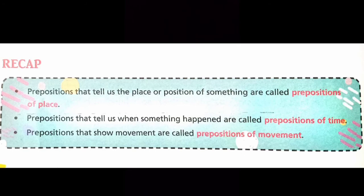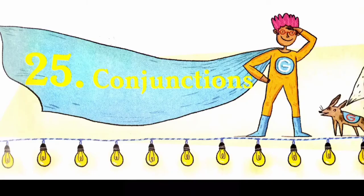Now let us move to the next chapter, which is conjunctions. Take chapter 25, Conjunctions, page number 137.